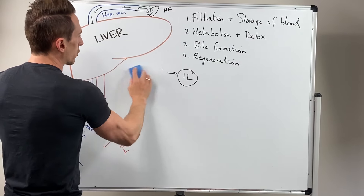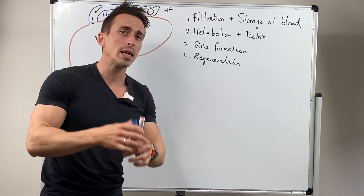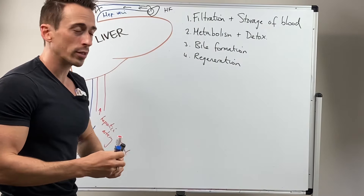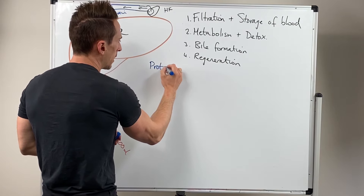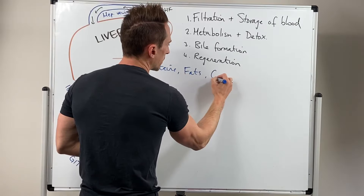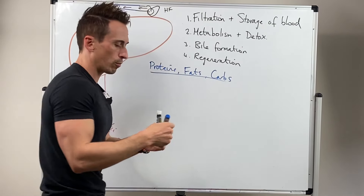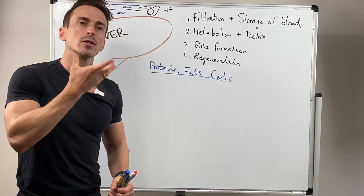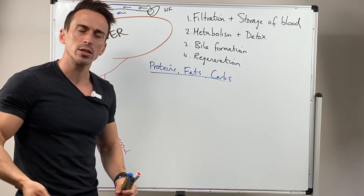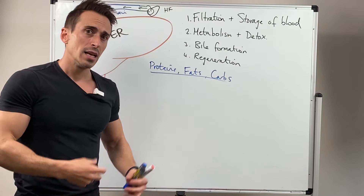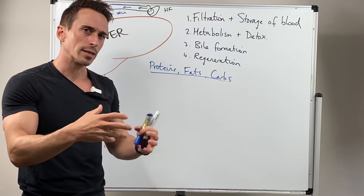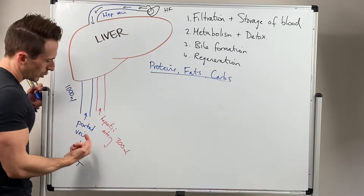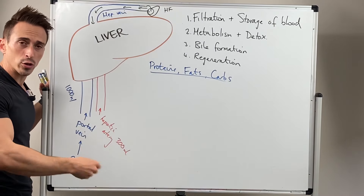Moving to metabolism and detoxification: the liver plays a really important role in the uptake, processing and distribution of nutrients — proteins, fats and carbohydrates. We ingest these through food; carbohydrates are broken down and absorbed through the intestines, jumping into the portal vein and going to the liver for processing, storage or utilization. Fats get absorbed into the lymphatic system but still reach the liver. All nutrients go to the liver for processing, storage or utilization.